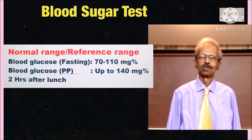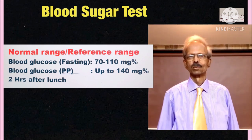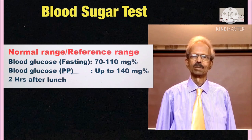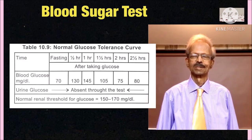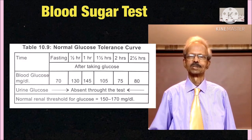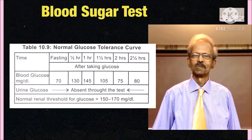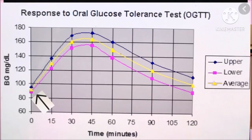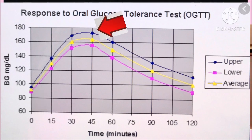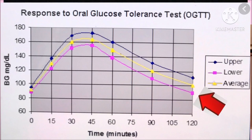The normal reference range of blood glucose: during fasting, the level of blood glucose remains in the range of 70–110 mg%. Following food, blood glucose rises up to 170 mg%, and due to the action of hormone insulin it decreases. Two hours after food ingestion, it again remains between 70–110 mg%.